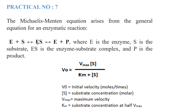In enzyme kinetics, an enzyme binds with its substrate to form an enzyme-substrate complex. This complex then forms an enzyme-product complex, after which the enzyme separates and is released unchanged, while the product is also released separately. So in the equation: E is for enzyme, S is for substrate, ES is the enzyme-substrate complex, and P is the product. The reaction is both forward and reverse, reaching an equilibrium state.